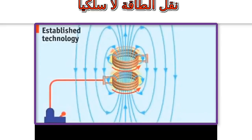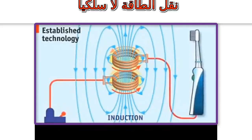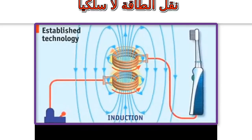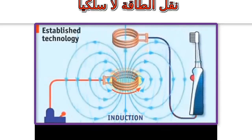Once a second coil is placed within proximity of the magnetic field, the field can induce an alternating current in the receiving coil. Electronics in the receiving device then converts the alternating current back into direct current, which becomes usable power.